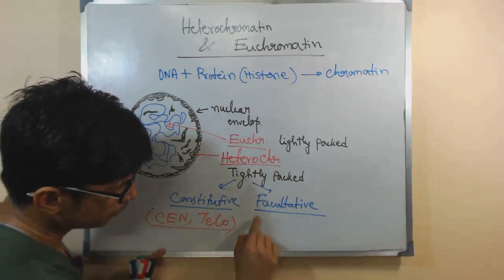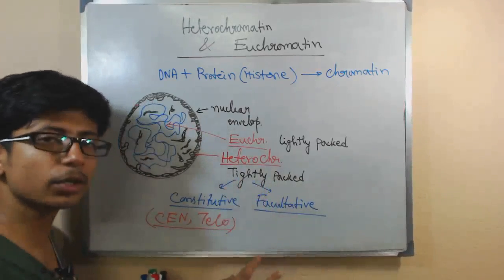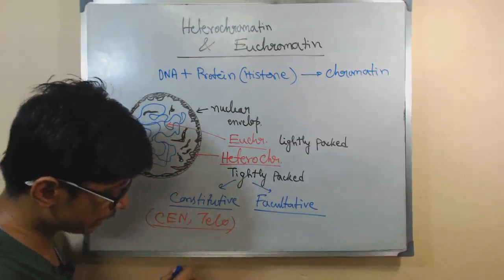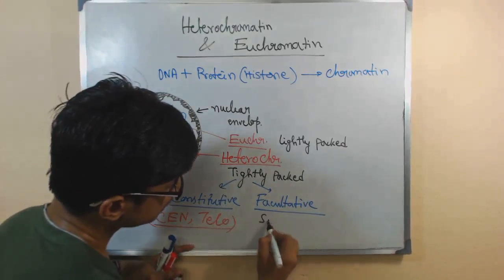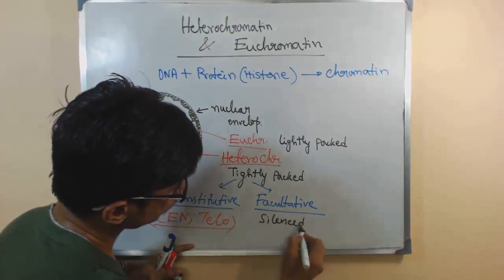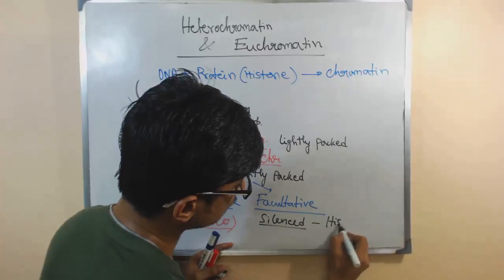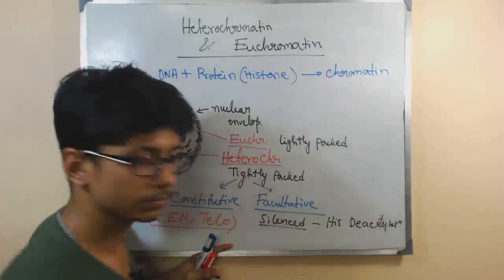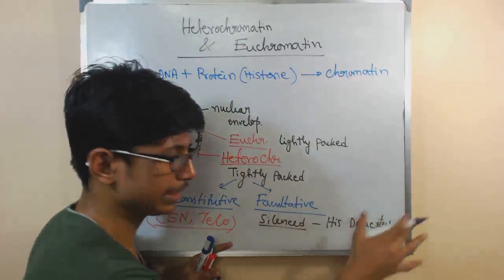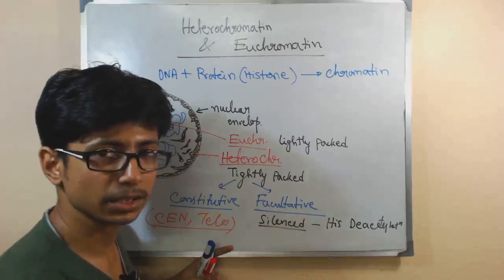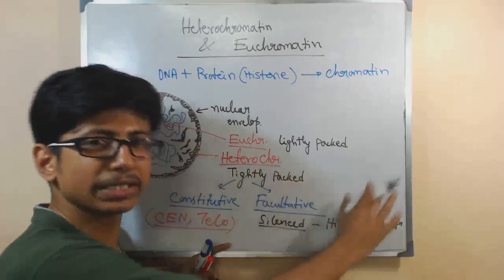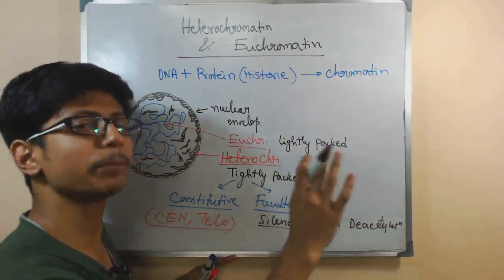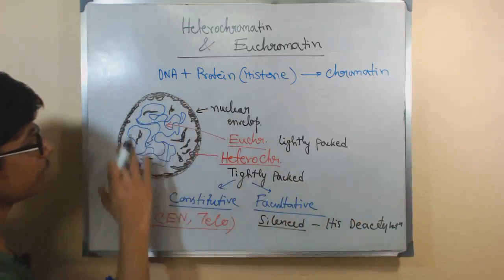On the other hand, facultative Heterochromatin are those Heterochromatin which are completely functionless. Why? Because those Heterochromatin, they are mostly silenced by histone deacetylation or methylation or any other events. They are silenced. They are no longer functional. They are not giving any structural role like centromere or telomere stuff. They are completely functionless.